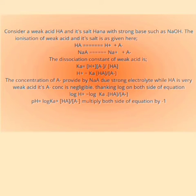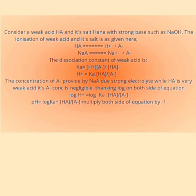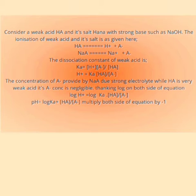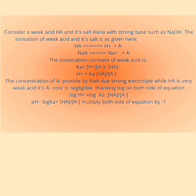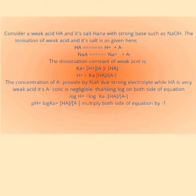To convert the negative sign to positive, we invert the fraction — placing A⁻ as the numerator and HA as the denominator. Therefore, the potential of hydrogen ion, i.e., pH, will be equal to pKa plus log of the molar concentration of salt divided by the molar concentration of acid.